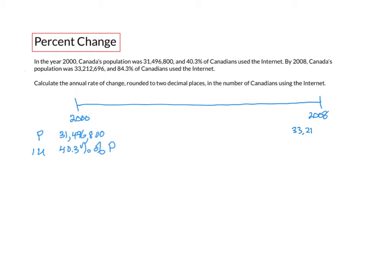In 2008, the population was 33 million 212 thousand 696, and 84.3% of that population used the internet. The number of internet users in the year 2000 would be 0.403 multiplied by 31 million 496 thousand 800, which works out to be 12 million 693 thousand 200.4.